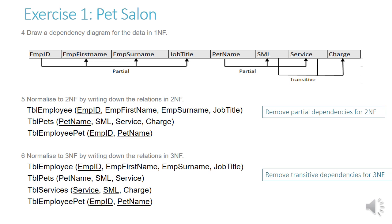For question 6, normalize to third normal form: table employee keeps EMP ID, EMP first name, EMP surname, and job title. Table pets becomes pet name, SML, and service — charge has been removed. A new table services contains service, SML, and charge, with service and SML combined as the primary key. Table employee pet retains EMP ID and pet name. The transitive dependencies have been removed for third normal form.